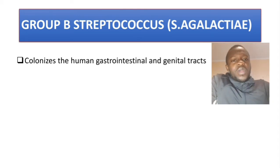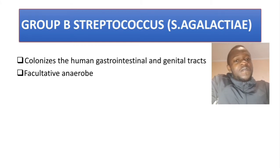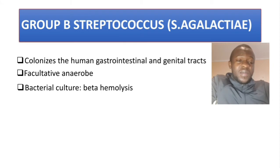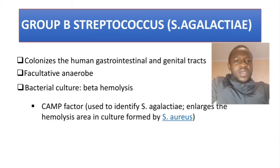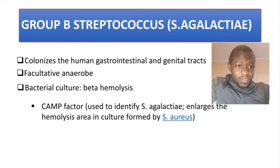This bacteria colonizes the human GIT and genital tracts. It's a facultative anaerobic, and in bacterial culture it causes beta hemolysis. There is also a test called the CAMP test — Staph aureus causes beta hemolysis, and this CAMP factor is used to test if Streptococcus agalactiae is present.